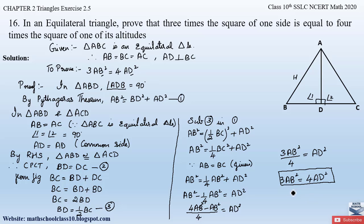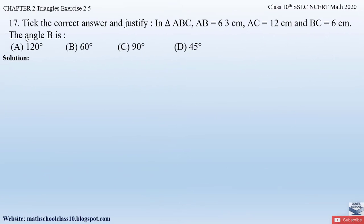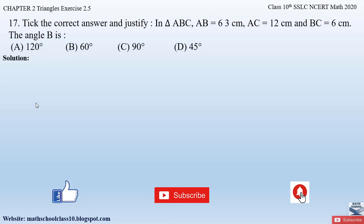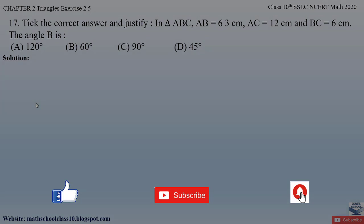So we obtain 3AB² = 4AD², which is what we had to prove. This is a very simple problem. If you have any further doubts, do comment below. In my next video I will be solving question number 17 from exercise 2.5, chapter 2 Triangles. Do like my video, subscribe to my channel, and hit the bell button to get the latest updates as I'll be completing the whole syllabus for class 10th SLC insert math. Also watch the related videos of chapter 2 Triangles shown on screen. Thank you.